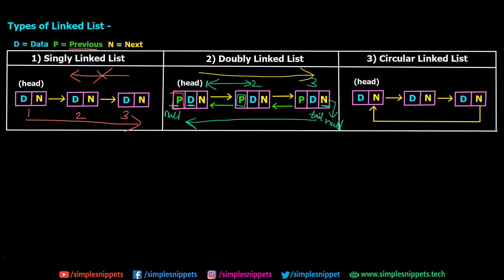Lastly, we have the circular linked list, which is like the singly linked list but with one change: the last node points back to the first node instead of pointing to null. In a singly linked list, the last node's next is null; in a doubly linked list, the tail's next also points to null. But in a circular linked list, the next pointer in the tail points to the very first node — the head node. So you can go in a circular pattern and reiterate the entire linked list, even though you can only go in one direction.